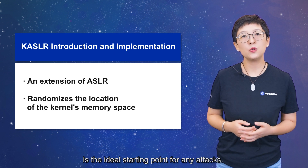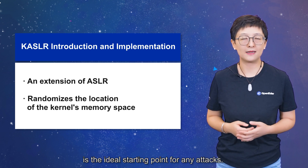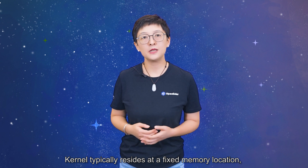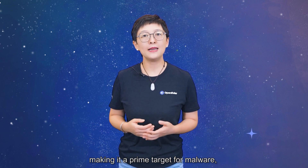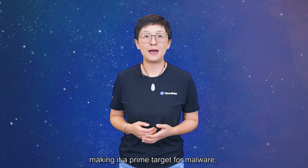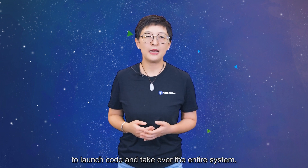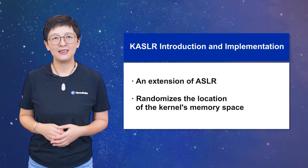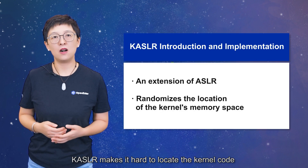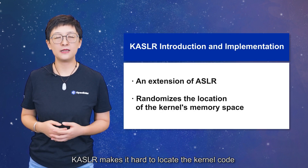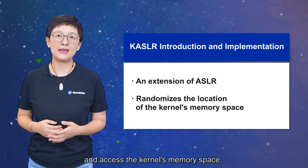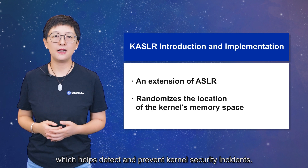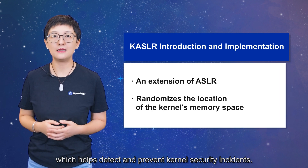The kernel, at the heart of any OS, is the ideal starting point for any attack. The kernel typically resides at a fixed memory location, making it a prime target for malware to launch code and take over the entire system. KASLR makes it hard to locate the kernel code and access the kernel's memory space, which helps detect and prevent kernel security incidents.